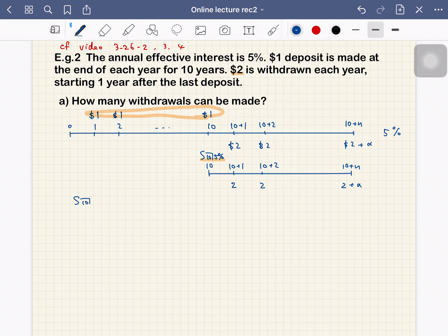At first, s angle 10 at 5% - you can use the BA2 Plus calculator using the future value button to get this is 12.578. Next we want to solve this time diagram. So solve 2 times a angle n at 5% equals 12.578. Basically we just ignore this balance alpha and we solve this.